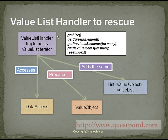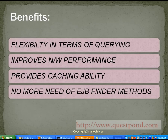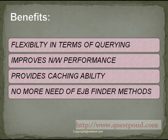Thus, by using the value list handler, the performance of the system will improve since in one call the entire list containing various value objects will be returned to the client. The following are the benefits of using the value list pattern: it provides flexibility in terms of querying as compared to the weak querying construct of the EJB find method; it improves network performance since in one call the entire list of value objects is returned to the client; it provides cacheability and there is no more need for EJB finder methods.